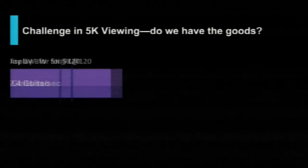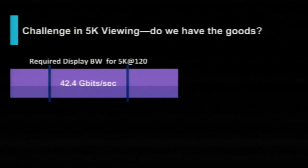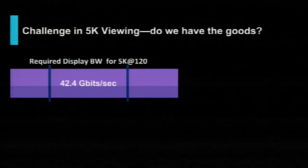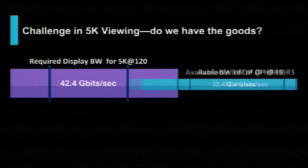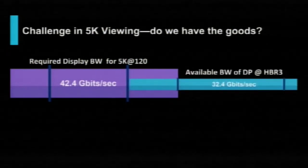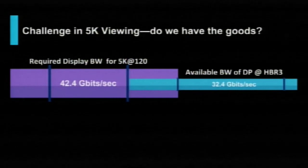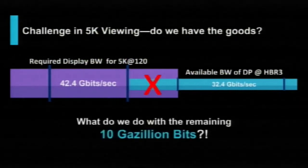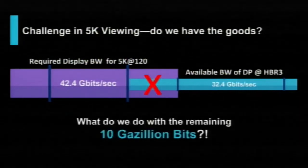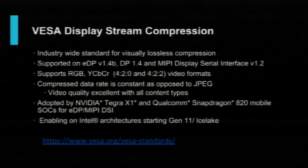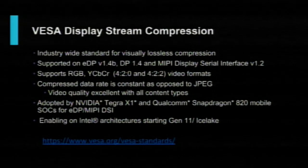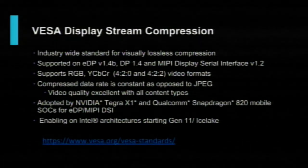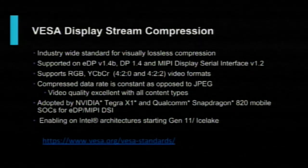So that's a tremendous amount of data you want to transmit over a DisplayPort cable. The required display bandwidth for high resolution, high frame rate is 42.4 gigabits per second, but what we have with the latest DP standard at HBR3 is only 32.4 gigabits per second. That's where the new standard comes into picture — VESA introduced Display Stream Compression.